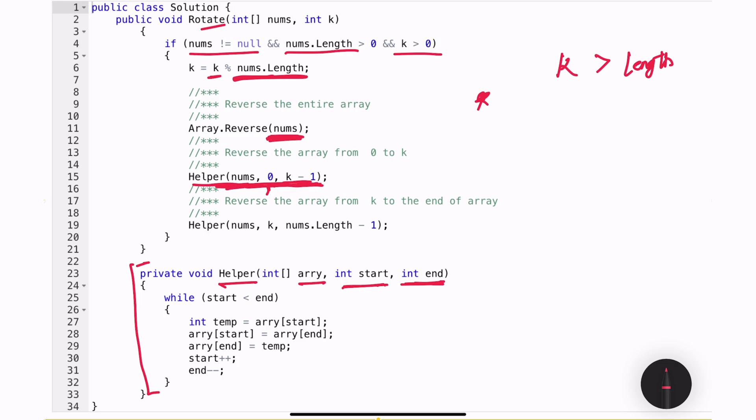After the first part of the array is reversed, I am calling the method again, but this time I am passing a different start and end index. So my start is k and the end is the nums dot length minus one. Once this helper method execution is complete, the second part of the array will be reversed and we will have our output in this nums array.